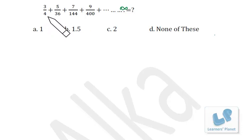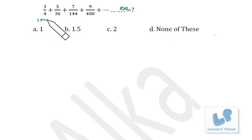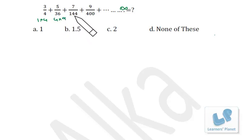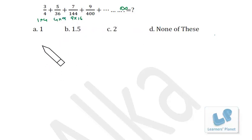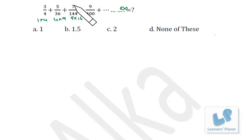4 can be written as 1 × 4, and the difference of 1 and 4 is 3. Similarly, 36 is 4 × 9, and the difference of 4 and 9 is 5. Similarly, 144 is 9 × 16, and the difference between these two is 7. So you can write the series as 3/(1×4) + 5/(4×9) + 7/(9×16) and so on.